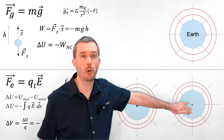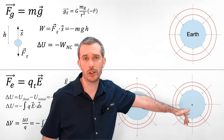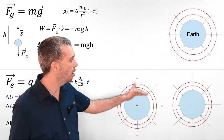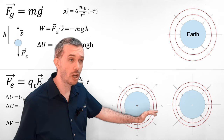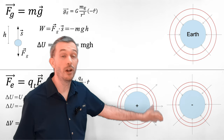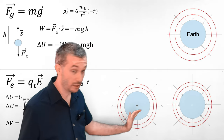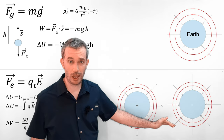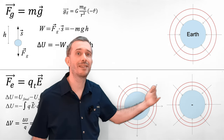So the field lines actually point from higher potential to lower potential. If we have a positive point charge, then the potential gets higher the closer we get to it. The closer we are to it with a positive test charge, the more potential of repulsion we have. In both cases, the electric field is perpendicular to the equipotential lines and points in the direction in which the potential goes down.